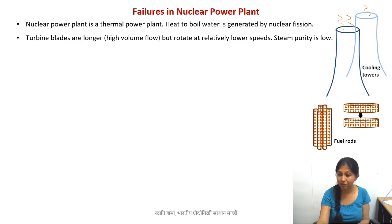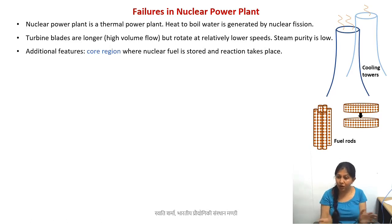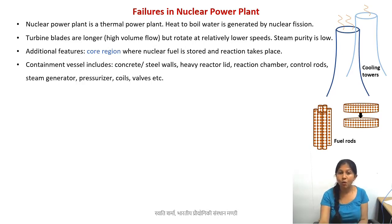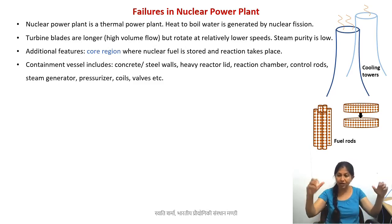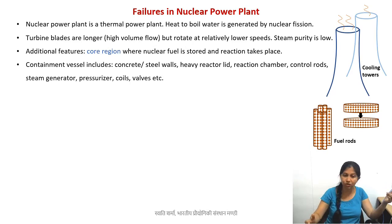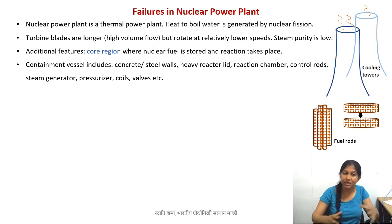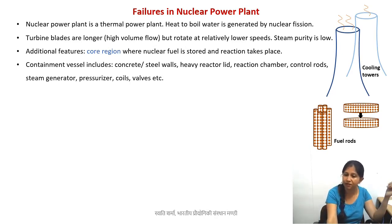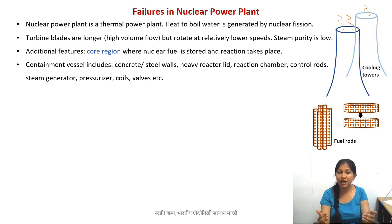The place where the reaction takes place has to be really strong. The chamber or vessel where the fuel goes — where the primary reaction takes place, known as the core region — is made of very strong steel-reinforced concrete walls. It also has a very heavy lid on top that can weigh a couple of tons. In addition to the fuel rods, there are also control rods, which are there to control the reaction and are made of materials that can absorb neutrons. We also have the steam generator inside the chamber, and in pressurized water reactors there are also pressurizers, different coils, different valves — all inside this strong containment vessel.